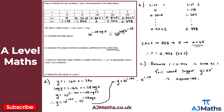This gives y equals 10 to the power of 1.164 times x to the power of 1.28, which is in the form y equals Ax to the power of N. Therefore, a equals 10 to the power of 1.164, which is approximately 14.6 to three significant figures, and n equals 1.28. That completes question 2 and the introduction to non-linear regression.